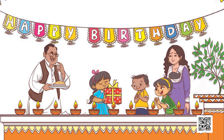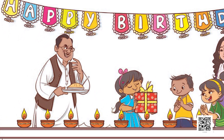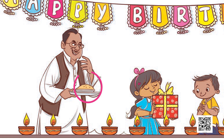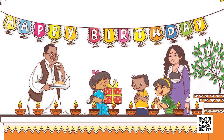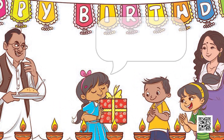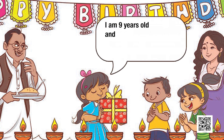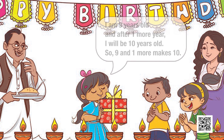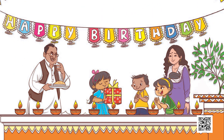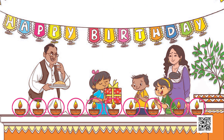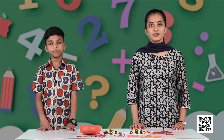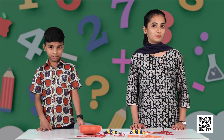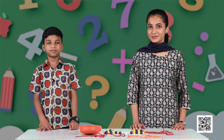It is Aastha's tenth birthday. Her father prepared halwa for her. She is celebrating her birthday with her friends. She says: I am nine years old and after one more year, I will be ten years old. So nine and one more makes ten. She has lighted ten diyas on her birthday. Dear friends, did you enjoy Aastha's birthday celebration? We hope you did.